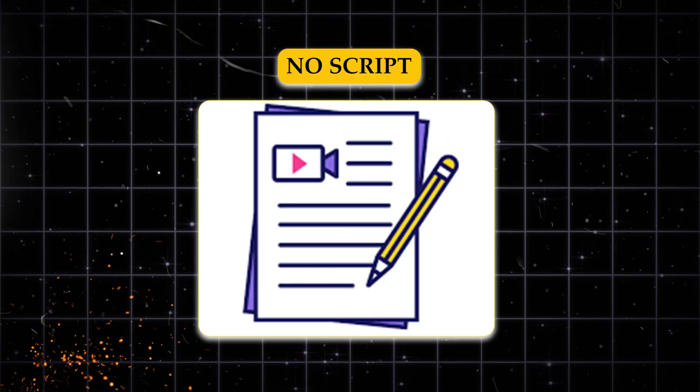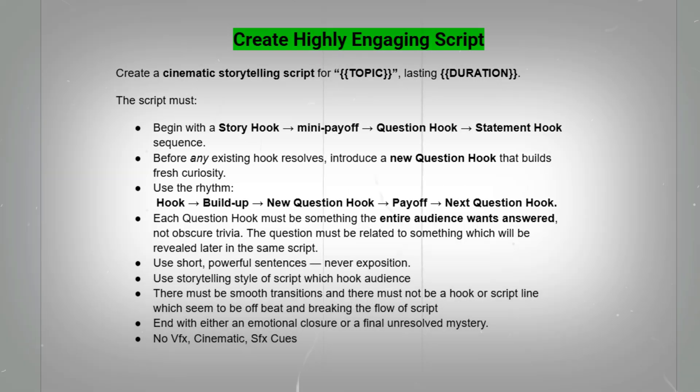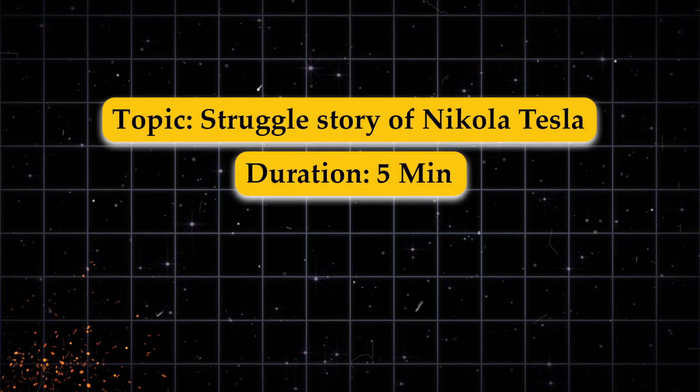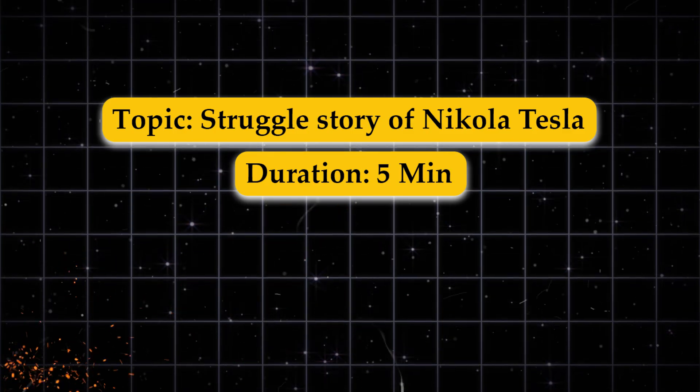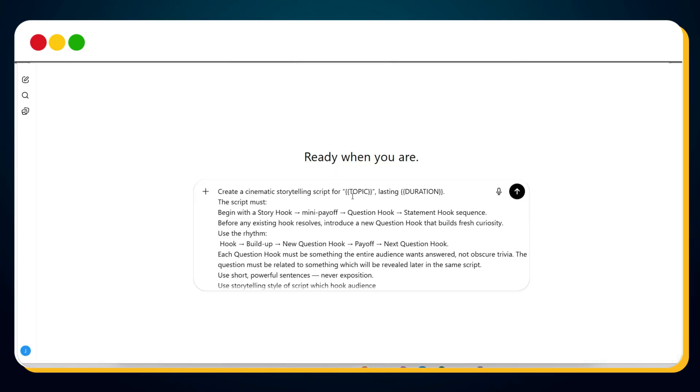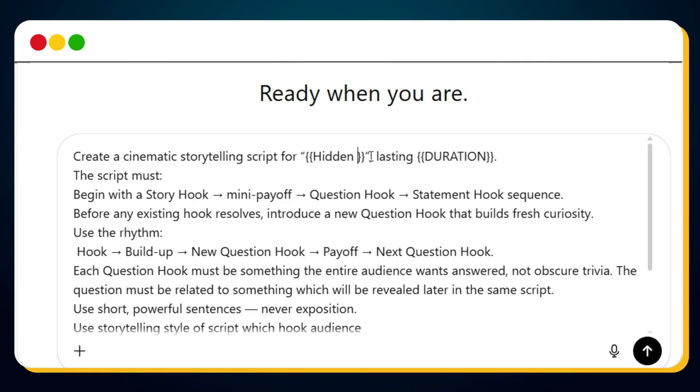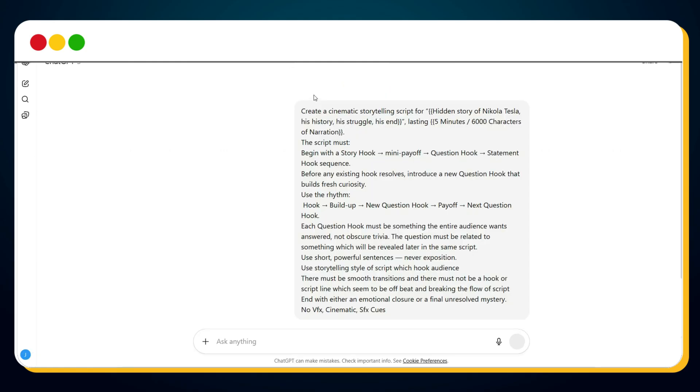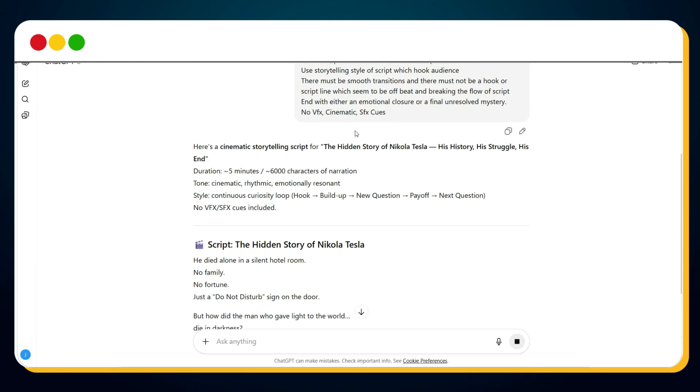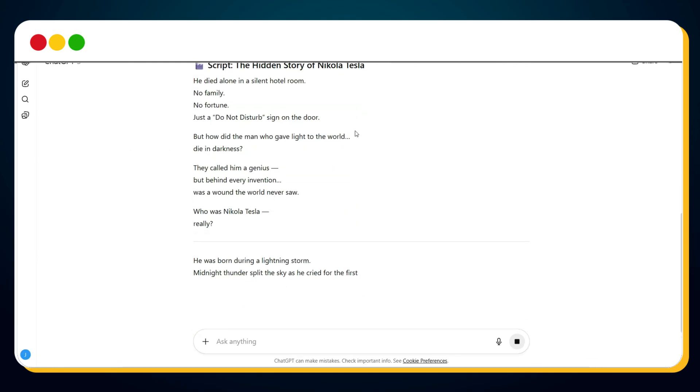And you can see ChatGPT instantly transforms your story into a high retention script that follows the magical scripting formula. And if you don't have a script yet, no problem. Use the second template. Just enter your video topic and duration, and ChatGPT will craft a full, engaging story. Let's try it and create a highly engaging 5-minute short script on topic, Struggle Story of Nikola Tesla.